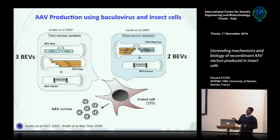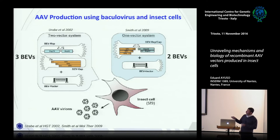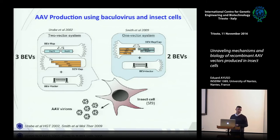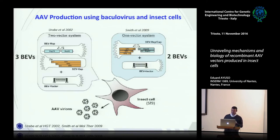The original idea used one baculovirus expressing the rep proteins, a second baculovirus with the cap protein, and a third baculovirus with the transgene. Later in 2009, rep and cap were combined into the same baculovirus, so you work with only two baculoviruses — one with the transgene and one with the rep and cap of interest. The advantage of this system is that baculoviruses are viruses that naturally infect cells, avoiding the limitations of chemical transfection.